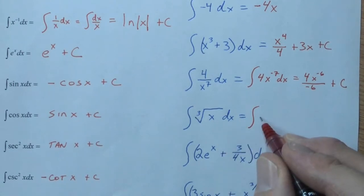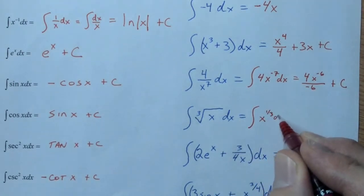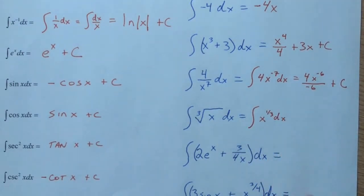But we know that the cube root of x is the same thing as x to the 1 3rd power. So, therefore, we can anti-derive x to the 1 3rd.